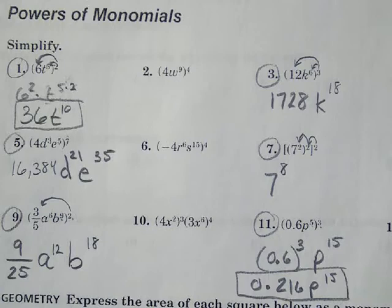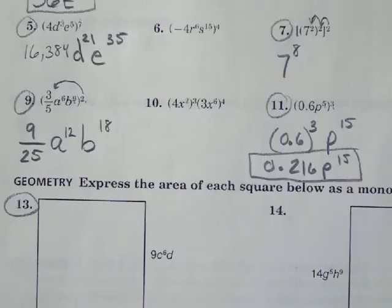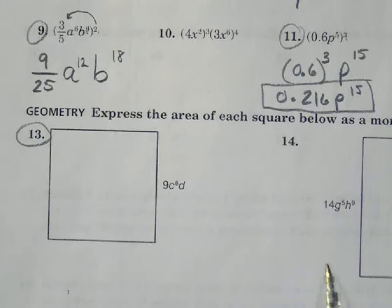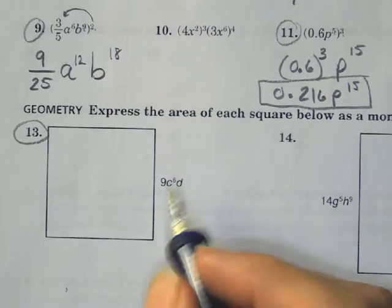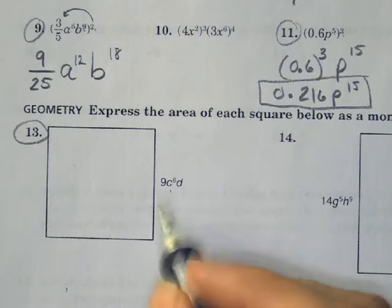For the last one here, let's take a look at number 13. We have a square which is supposed to express the area as a monomial. To find the area of a square, it's the length times the width, or the length squared.